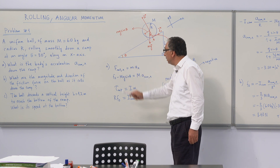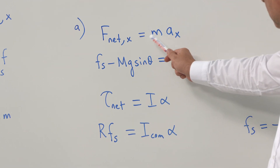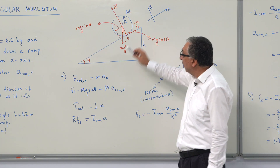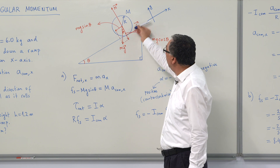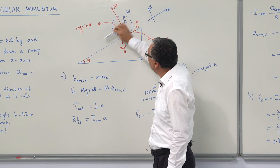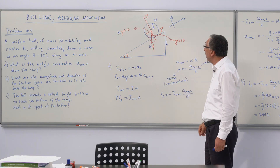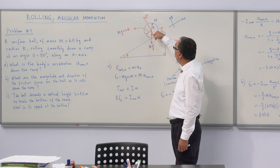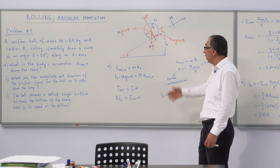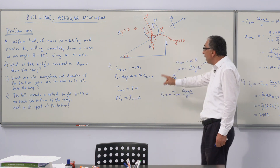We apply Newton's second law: the net force in the x-direction equals mass times acceleration. In the positive x-direction we have the component of gravity (mg sin θ), and in the negative direction we have the static frictional force, giving us the equation m times acceleration. Since the ball is also rotating, we must apply the torque equation.